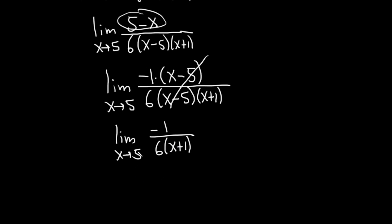And at this point, we can go ahead and replace the x with 5. When we do that, we drop the limit sign. So this is negative 1 over 6 parentheses 5 plus 1. And that's equal to negative 1 over 6 times 6, because 5 plus 1 is 6. And that's negative 1 over 36, and that would be the limit. I hope this video has been helpful. Good luck.